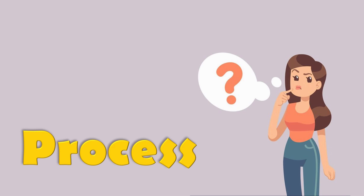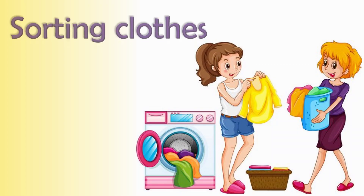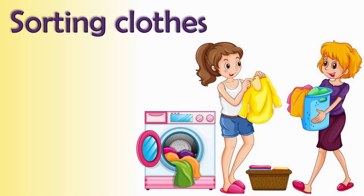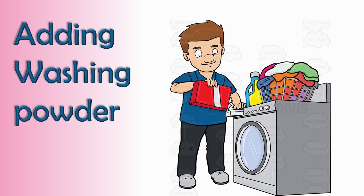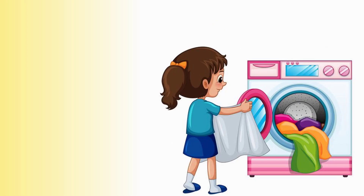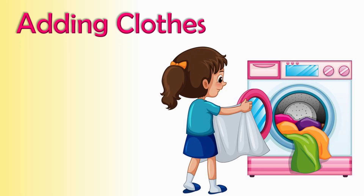The way you wash your clothes will be the process. As a first step, we can sort our clothes according to color — light-colored clothes separately and then the dark-colored ones. Next, add water into the washing machine, then add the washing powder, then add the clothes. Finally, by giving commands with the buttons, you can finish the procedure.